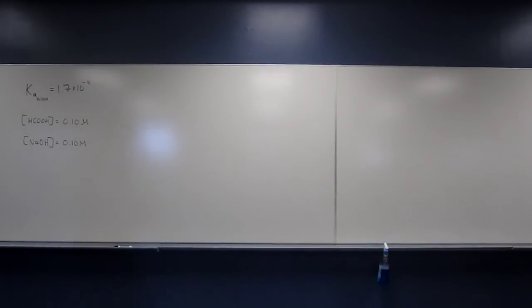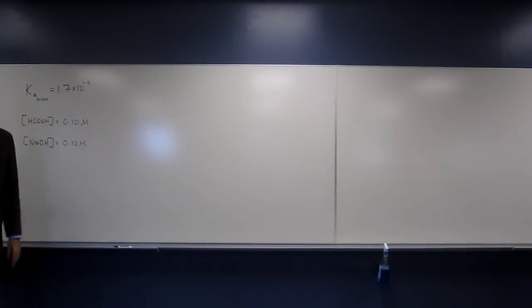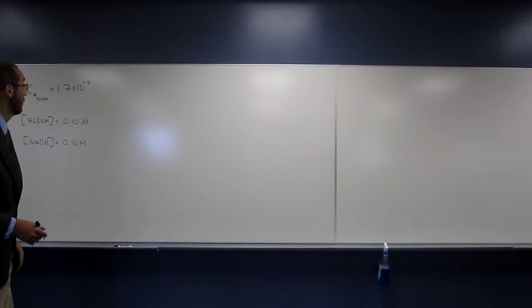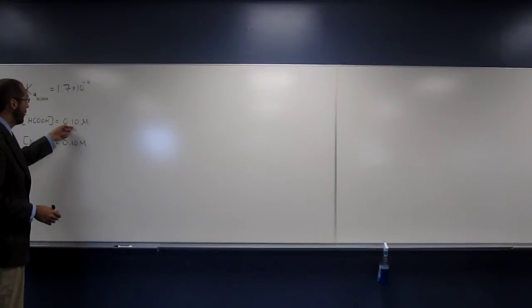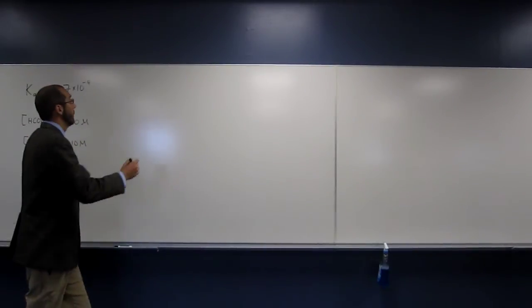So the first thing you're going to want to know is it's talking about the equivalence point, but it doesn't give you any volumes. So you can assume that these are in one liter, or we've titrated one liter. So if we've got one liter solution of this, we've got one liter solution of this, then we'll have 0.10 moles of this, 0.10 moles of this. So when we do that, we can set up the reaction equation.